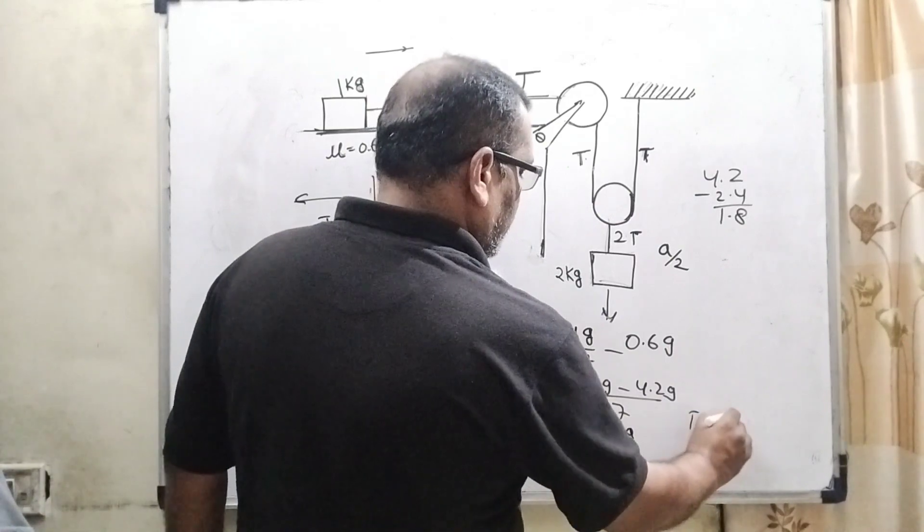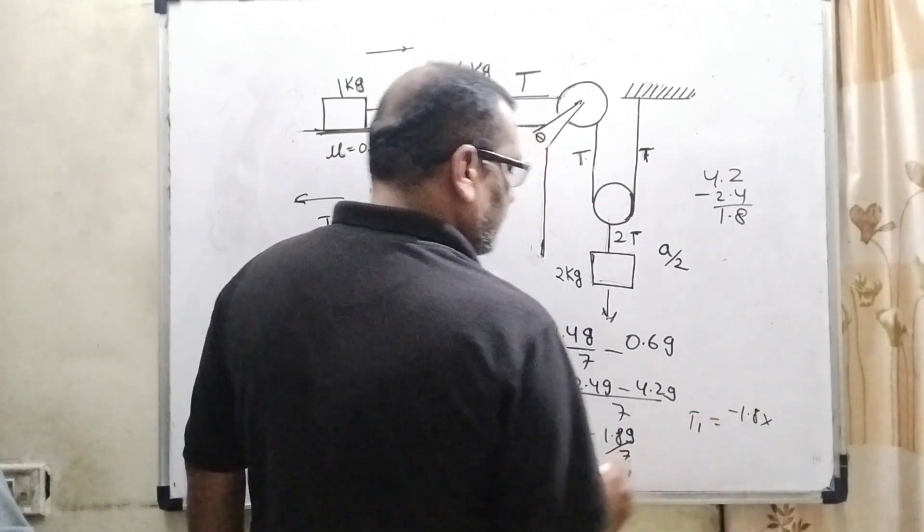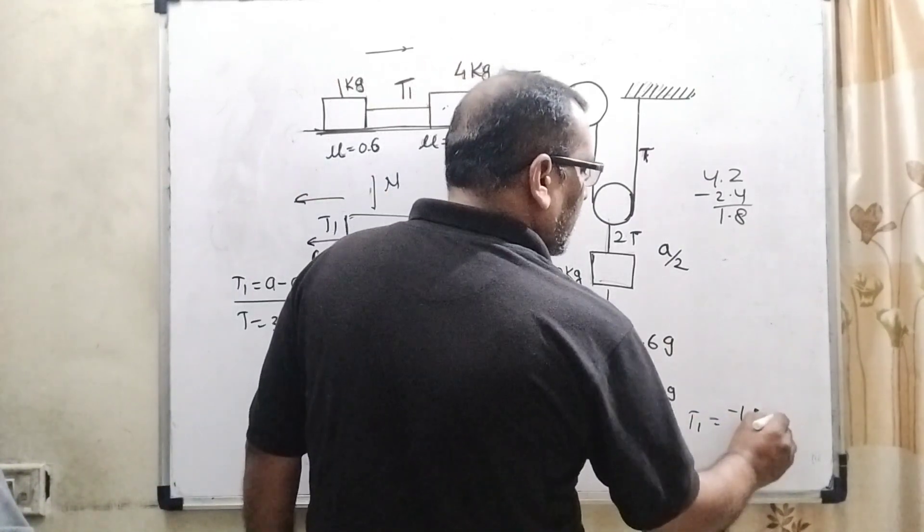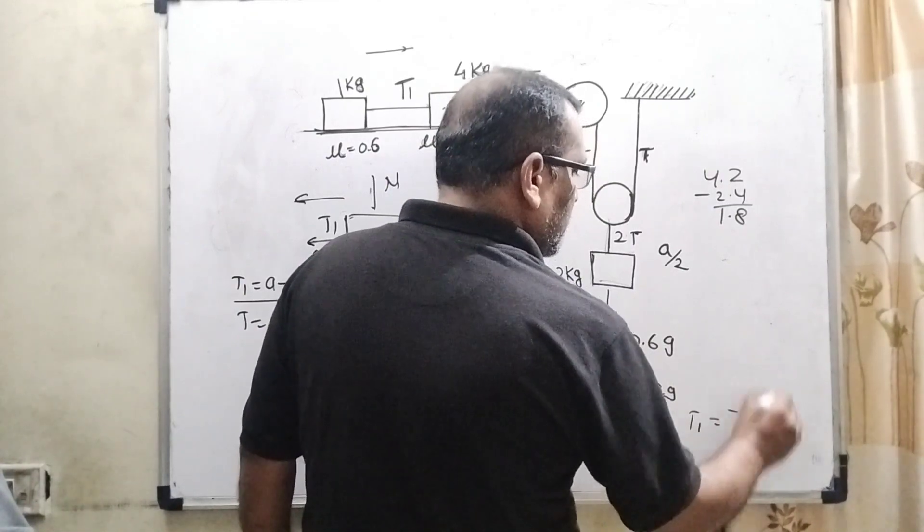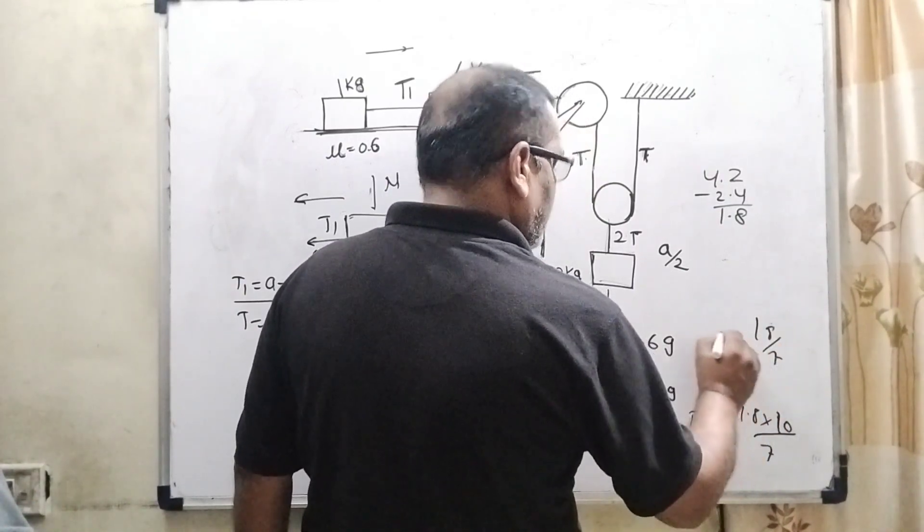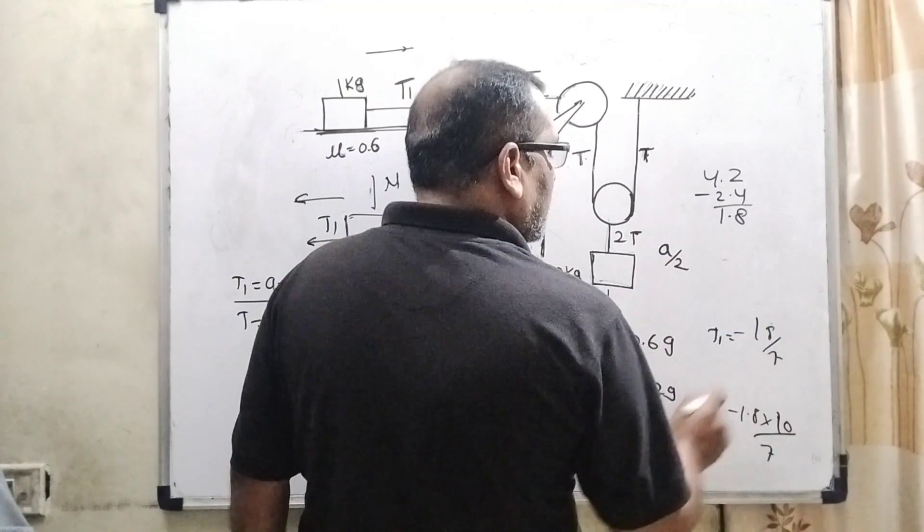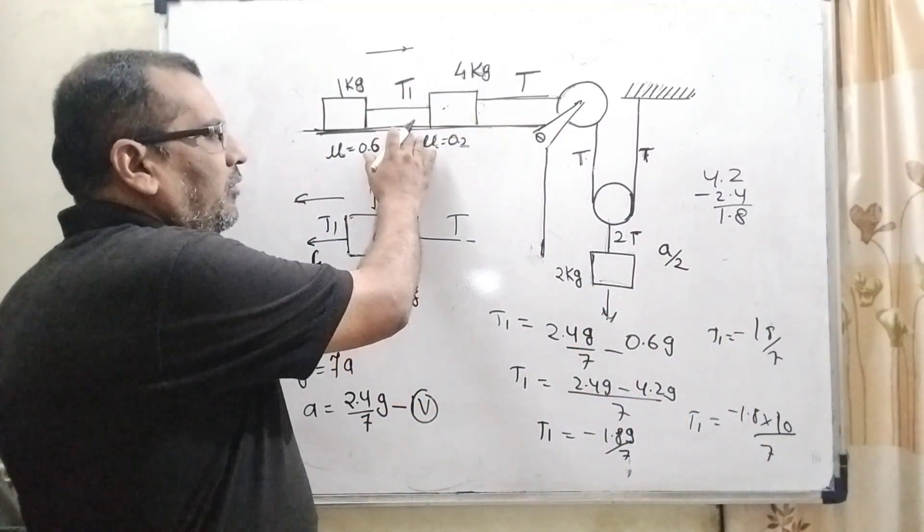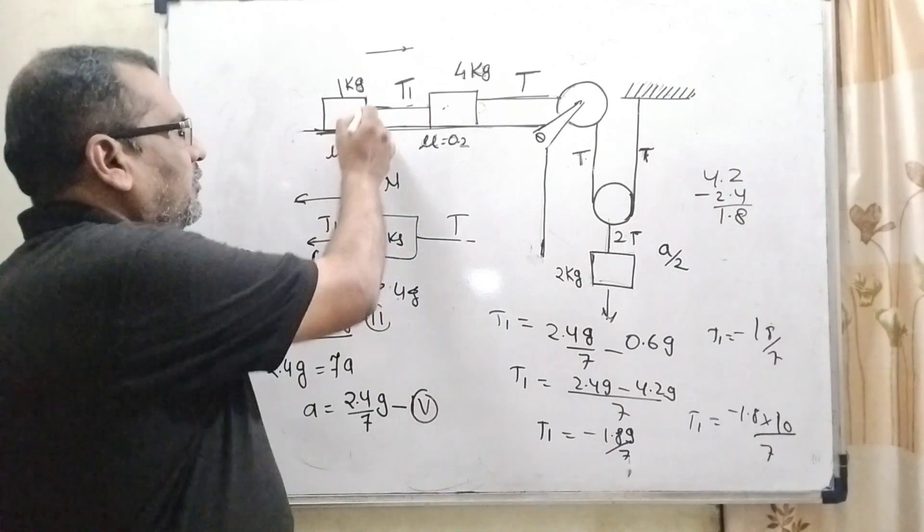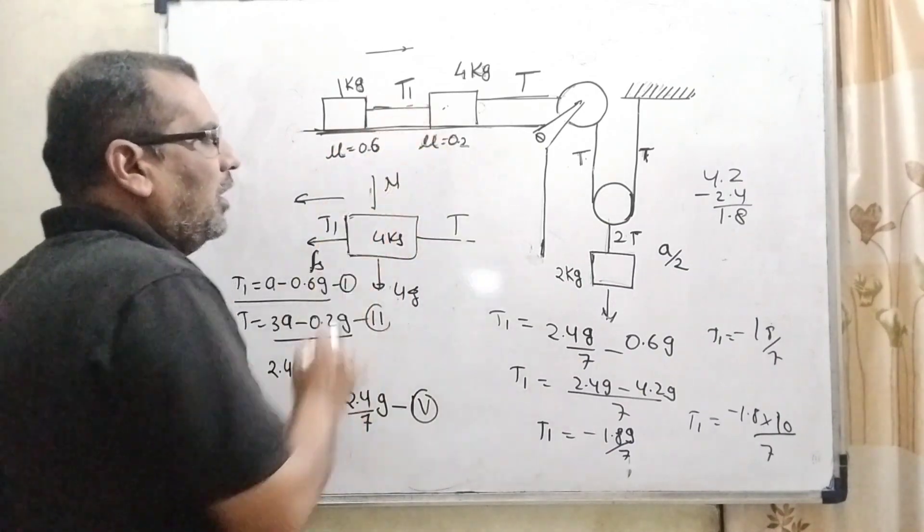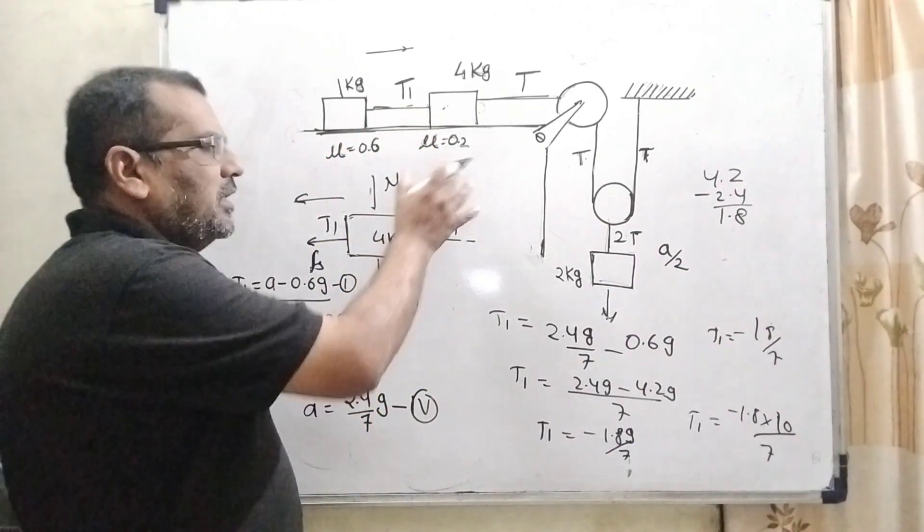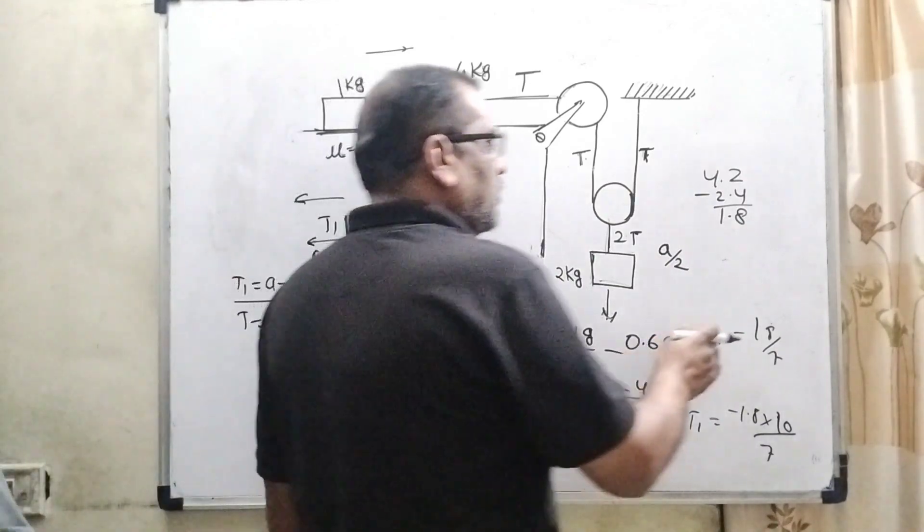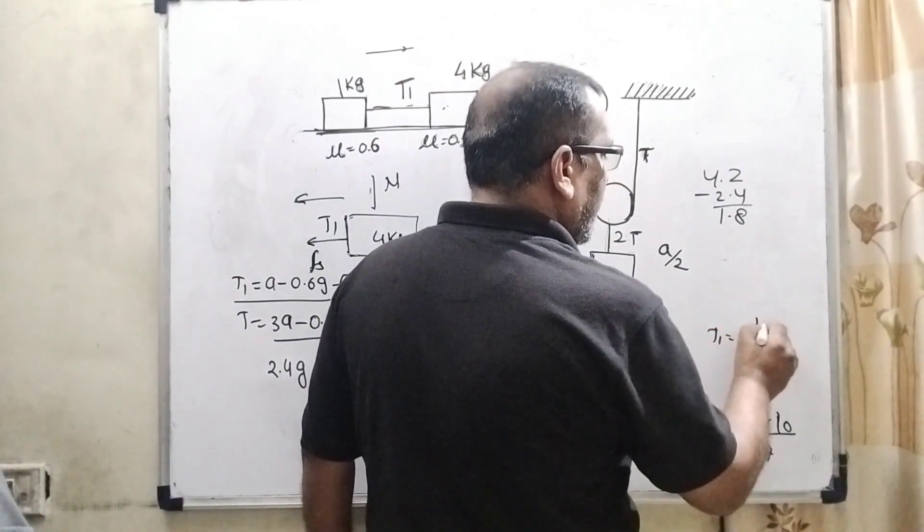So here we can see that what is the value of G? Consider 10. So now 18 by 7. Negative sign shows that is working against this value of this block and it shows the static condition.